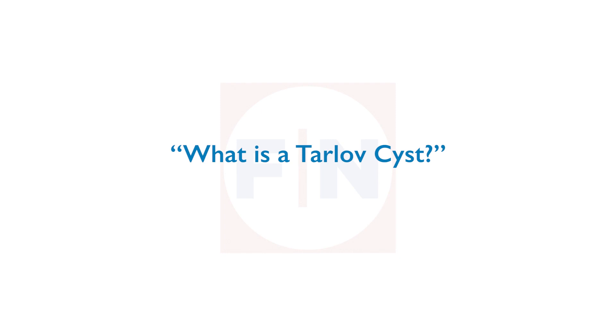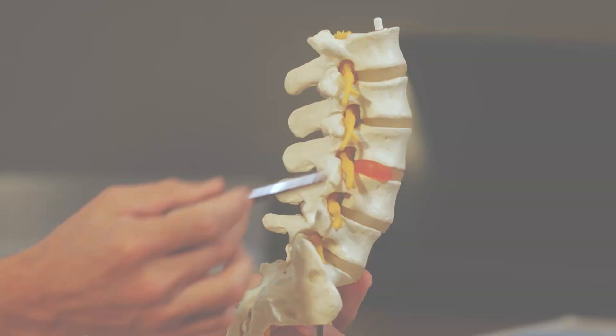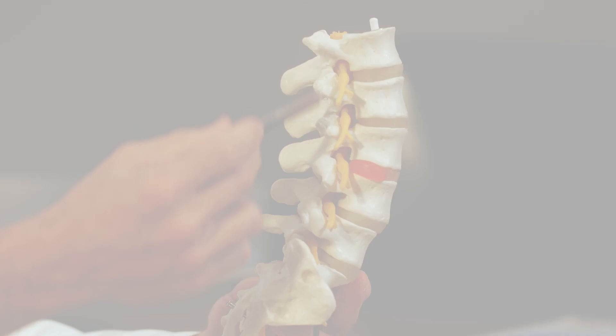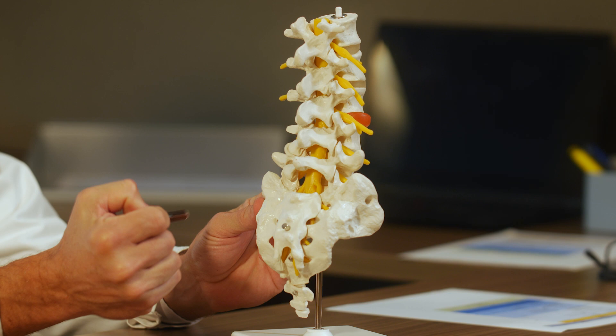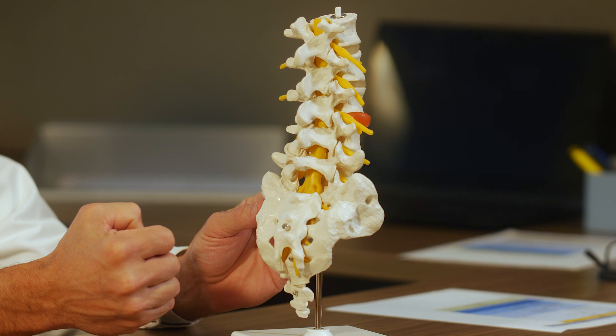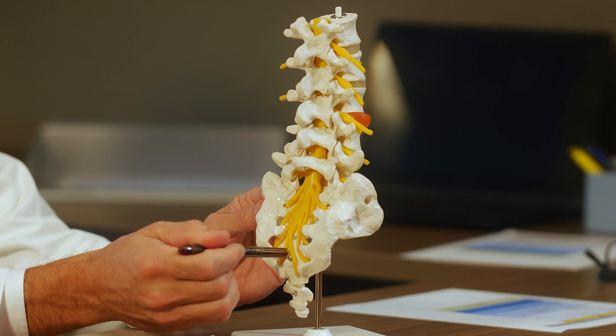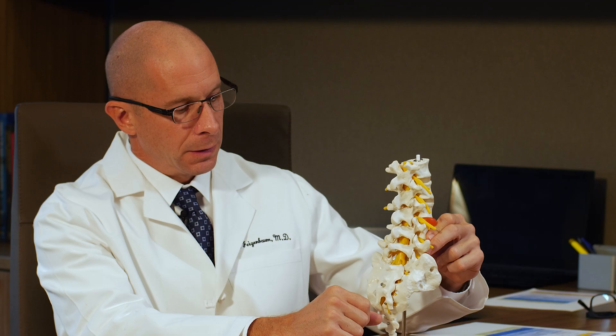Tarlov cysts are a type of spinal meningeal cyst. This is a model of the spine — the lumbar part of the spine, which is from here to here, and then the sacrum part of the spine or the tailbone. Inside the spine is a canal, and in that canal there's a sac which is signified by this yellow tube here. The covering of that sac is called the meninges, and hence cysts that arise from the covering of the spinal sac and the nerves that come off of it are called meningeal cysts.